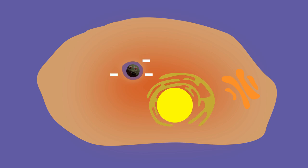The virus detects these changes and exits the endosome once it is deep in the cell by fusing its viral membrane with the endosomal membrane. This fusion releases the Dengue nucleocapsid into the cell's cytoplasm.